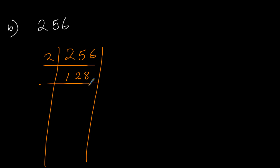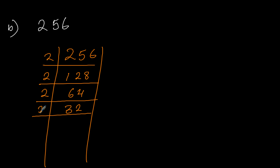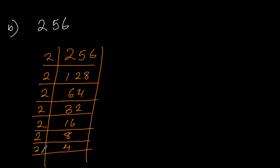Then 128 divided by 2 we get 64. 64 divided by 2 we get 32. 32 divided by 2 we get 16. 16 divided by 2 we get 8. 8 divided by 2 we get 4. 4 divided by 2 we get 2. And 2 divided by 2 we get 1.